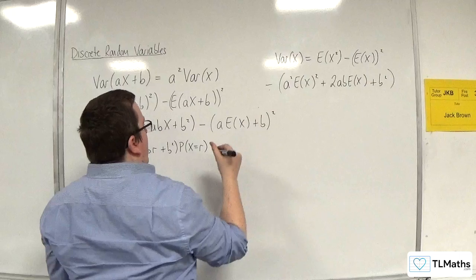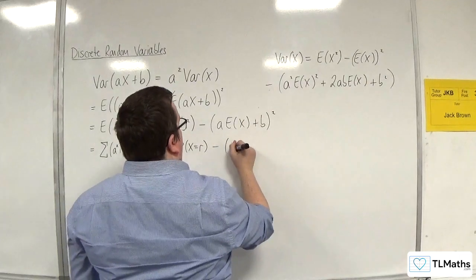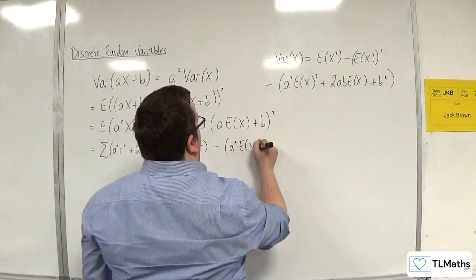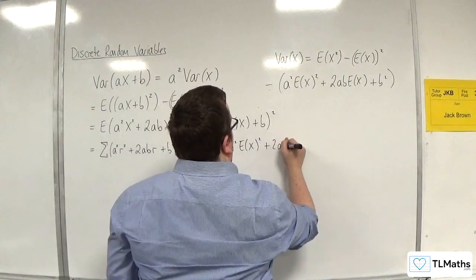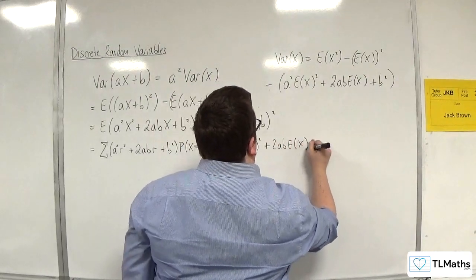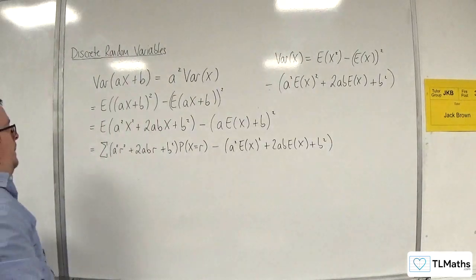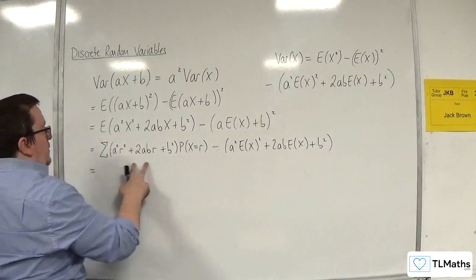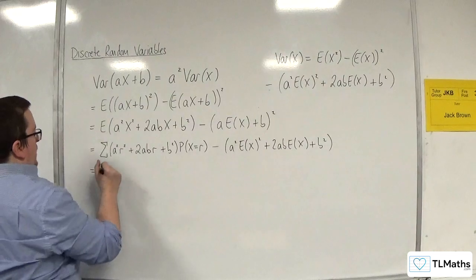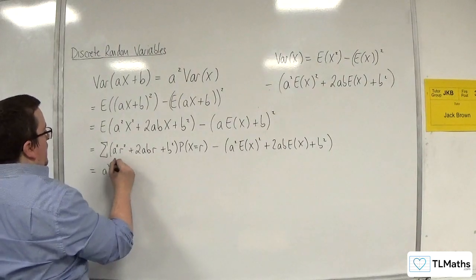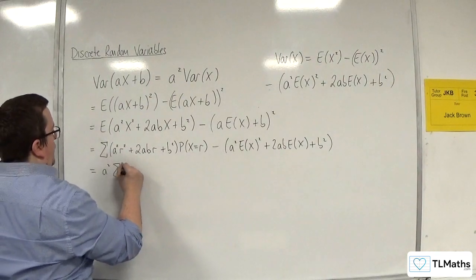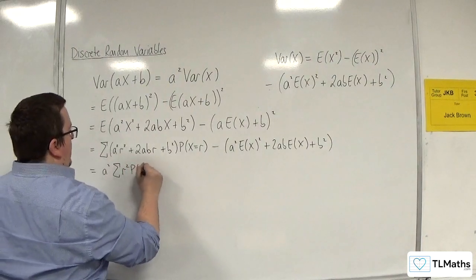I think I'll leave that as it is actually. I'll leave that as it is. a squared e of x all squared plus 2ab e of x plus b squared. Let's leave that. So let's split this up.